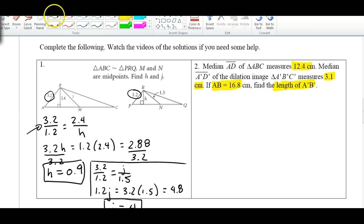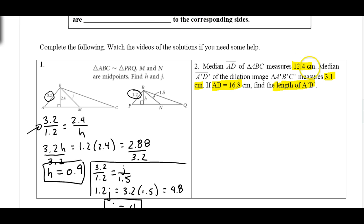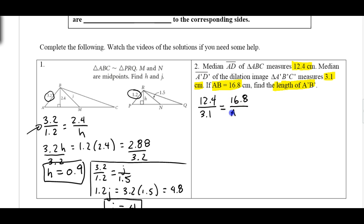So let's go ahead and set up our proportion. We've got 12.4 for segment AD and 3.1 for A prime D prime. Then coming back to the original triangle, AB is 16.8, and we're trying to find the length of A prime B prime — you can put an X or whatever variable you choose.